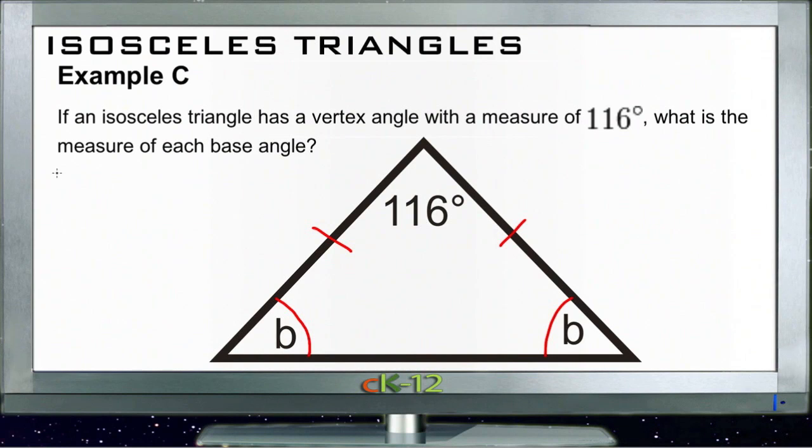So what we have then is two measures of whatever B degrees is and one measure of the top angle. So our total of 180 degrees is going to be equal to 116 degrees plus two of whatever B is, because we have both of those angles down here are each B and we have two of those.